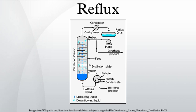Reflux in industrial distillation – The term reflux is very widely used in industries that utilize large-scale distillation columns and fractionators such as petroleum refineries, petrochemical and chemical plants, and natural gas processing plants. In that context, reflux refers to the portion of the overhead liquid product from a distillation column or fractionator that is returned to the upper part of the column, as shown in the schematic diagram of a typical industrial distillation column.